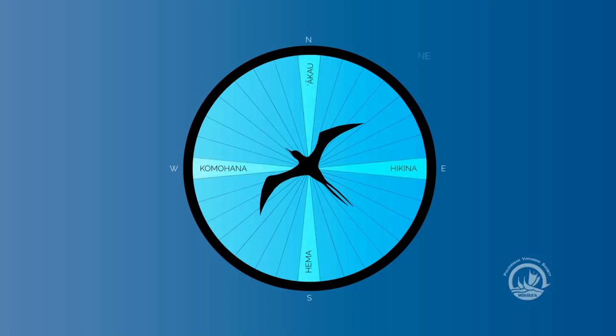And then it evenly places northeast, northwest, southwest, southeast. If you go from north to east, in that quadrant, that is Ko'olau.